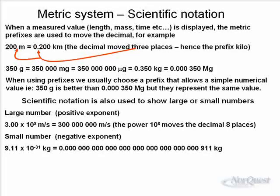Scientific notation is also used to show large or small numbers. Large numbers have a positive exponent. You're multiplying the base of the number by 10^8, or by 10^-31. So 3.00 × 10^8 m/s, that's the speed of light, is written in scientific notation as 3.00 × 10^8, or three with eight zeros following it. A small number, such as the mass of an electron, 9.11 × 10^-31 kilograms, you can see that negative 31 has actually moved the decimal place 31 places to the left, making a very small, small number.